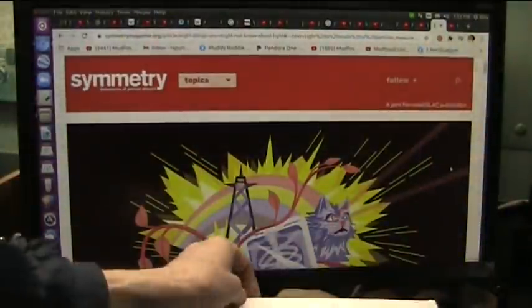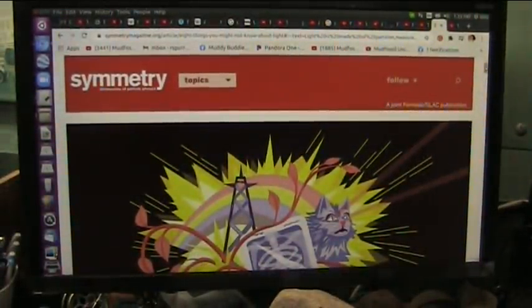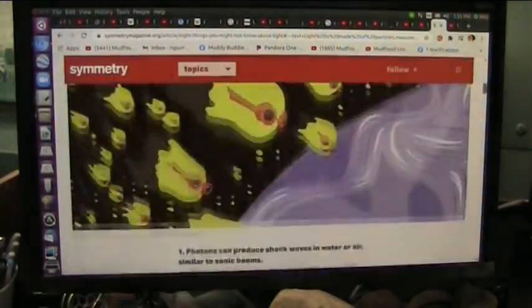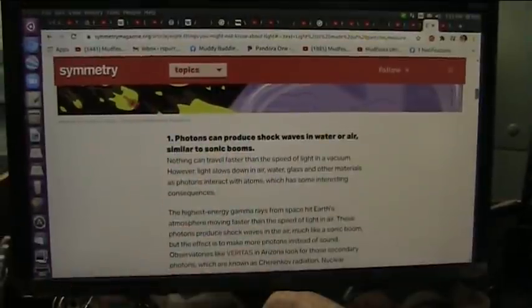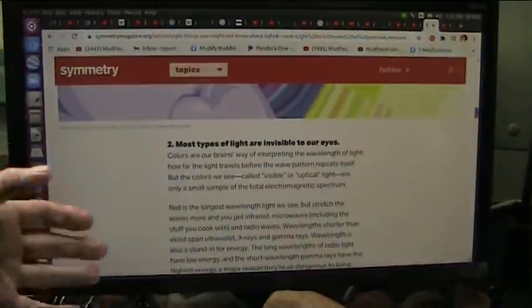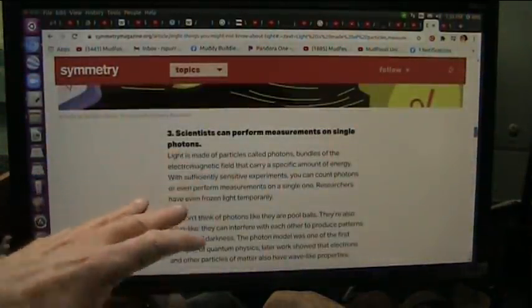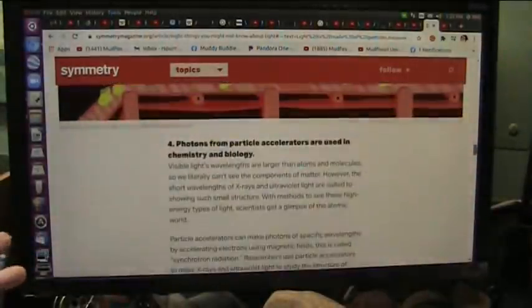But first, let me show you what they say. I'm not making this up. This is Fermilab, and here they go about eight things you've got to know about light. Here's one of the first things: photons can produce shock waves, which I show so clearly. Most light, obviously, you can't see it. Scientists perform measurements on single photons now.